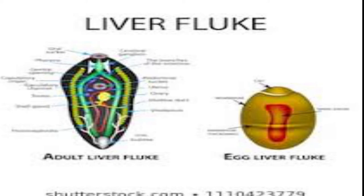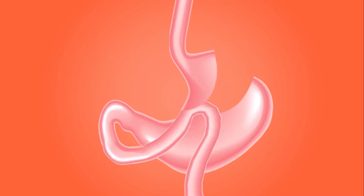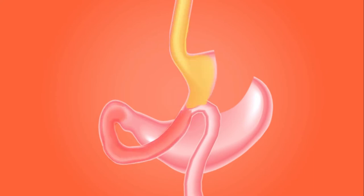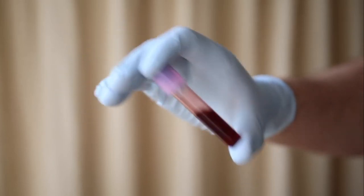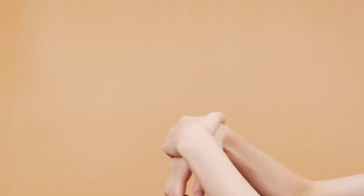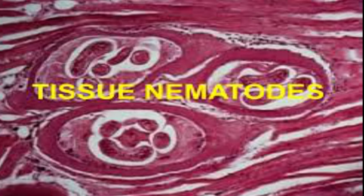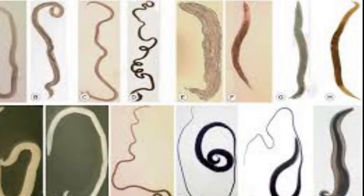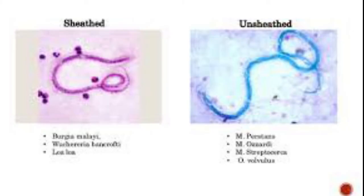As for the round worms, or the nematodes, we can also subdivide them into those found in the gastrointestinal tract of man — we call them the intestinal nematodes — and those that dwell in the tissue. Some dwell in the blood, muscle, connective tissues, and under the skin. Those ones are called the tissue nematodes. Generally, the intestinal nematodes are large in size, while the tissue nematodes are small.